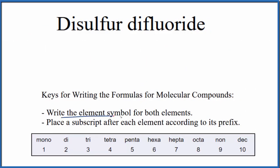First, we're going to write the element symbol for both elements. Sulfur, that's S. Fluoride, that's from fluorine, that's just F.